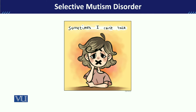Regarding selective mutism, it is said that if treatment is not provided at early ages and the child is not given proper psychological health support, then it can linger on. Lingering means the features of selective mutism may persist — the child may continue not speaking in other situations — and the problem may carry forward.